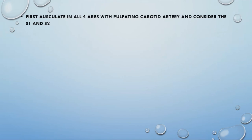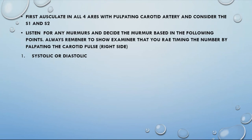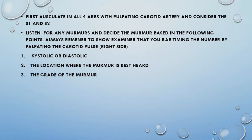First auscultate in all four areas while palpating the carotid artery, and comment on S1 and S2. Then listen for any murmurs. When timing a murmur, always palpate the carotid pulse simultaneously. For each murmur, determine: whether it is systolic or diastolic, the location where it is best heard, and the grade of the murmur.